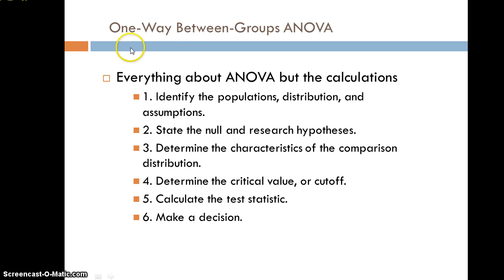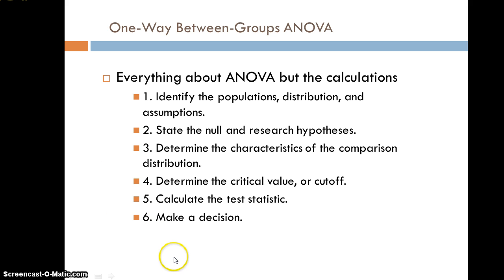We're going to start by talking about the one-way between-groups analysis of variance. The steps are basically the same as what we've been doing: figure out your populations (here, at least three), the distribution is an F-distribution, discuss assumptions (some of which are new), state null and research hypotheses, find the characteristics of the comparison distribution and critical value, compute the test statistic, and make a decision about the null hypothesis.